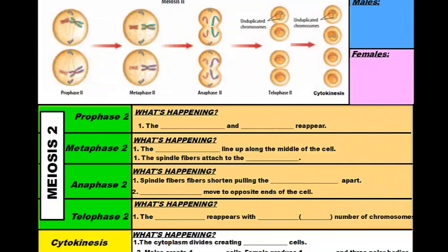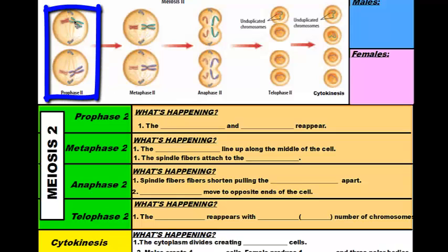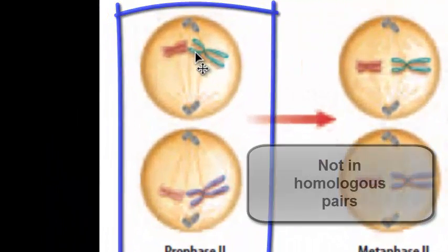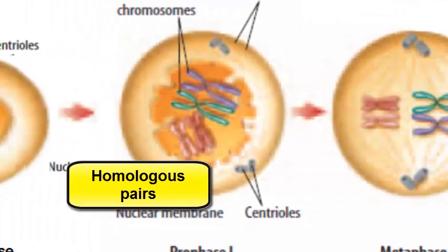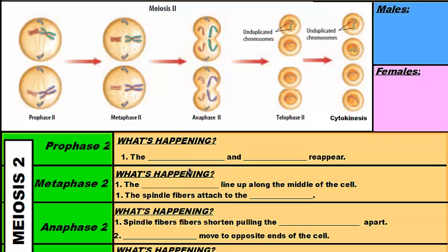Now we're in the second division. What's different is that we deal with two cells now, and the chromatids are by themselves — they're not in homologous pairs like they were in meiosis I. Everything else is the same: the spindle fibers reappear in prophase, prepping for division. Then the chromatids line up in the middle of each cell, and the spindle fibers again attach to the centromeres.